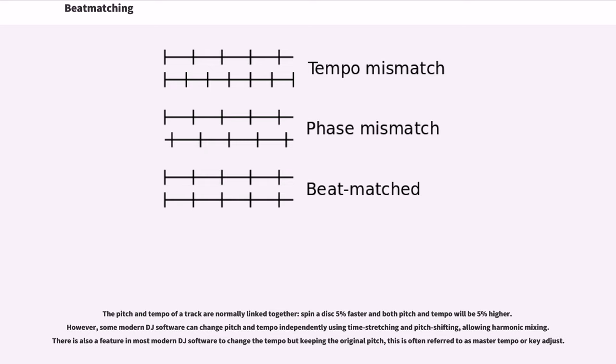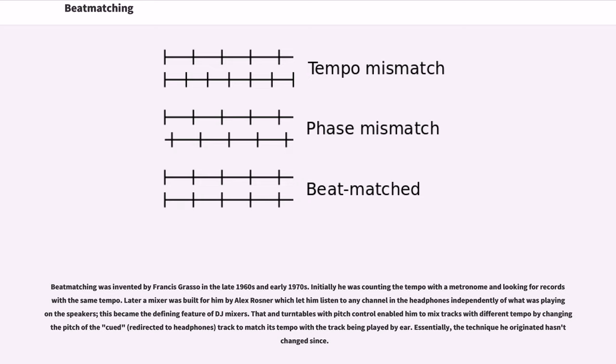Beatmatching was invented by Francis Grasso in the late 1960s and early 1970s. Initially, he was counting the tempo with a metronome and looking for records with the same tempo.